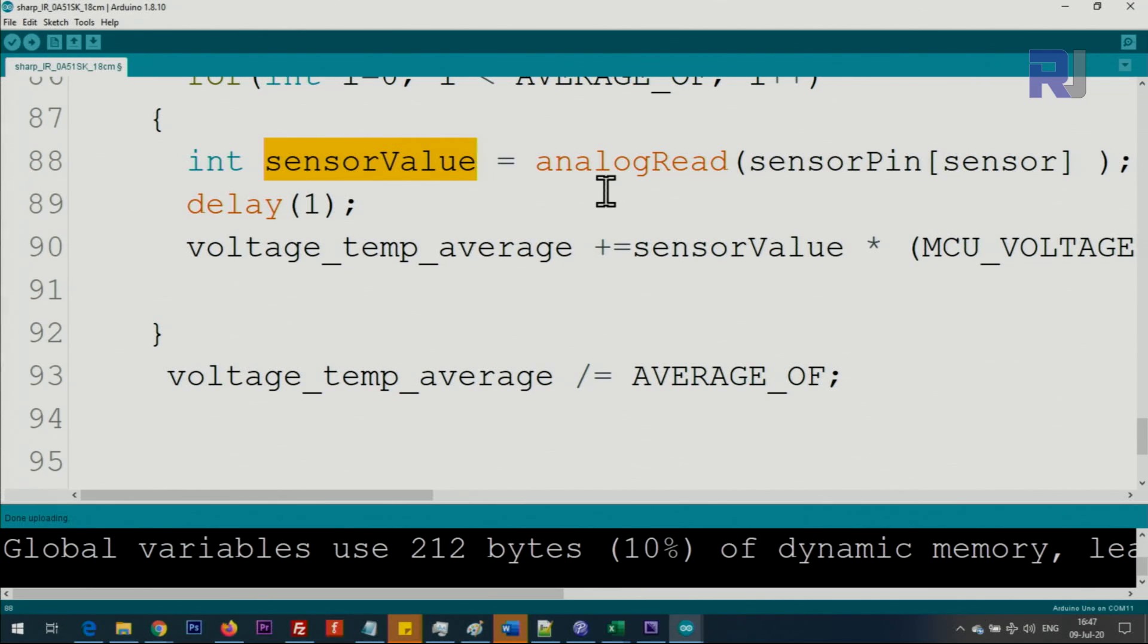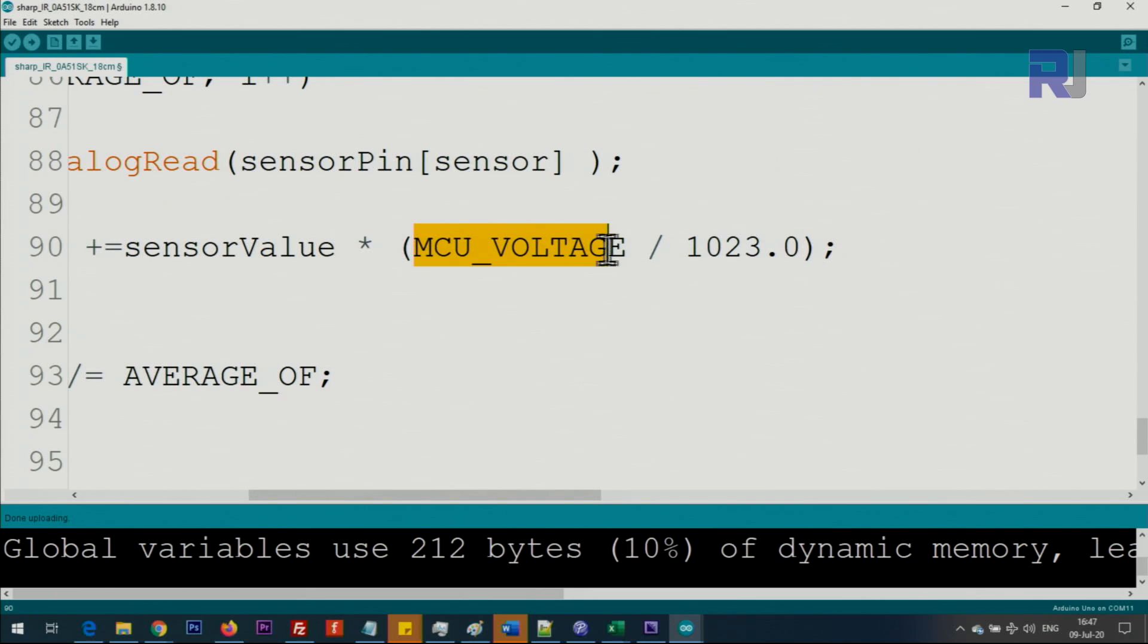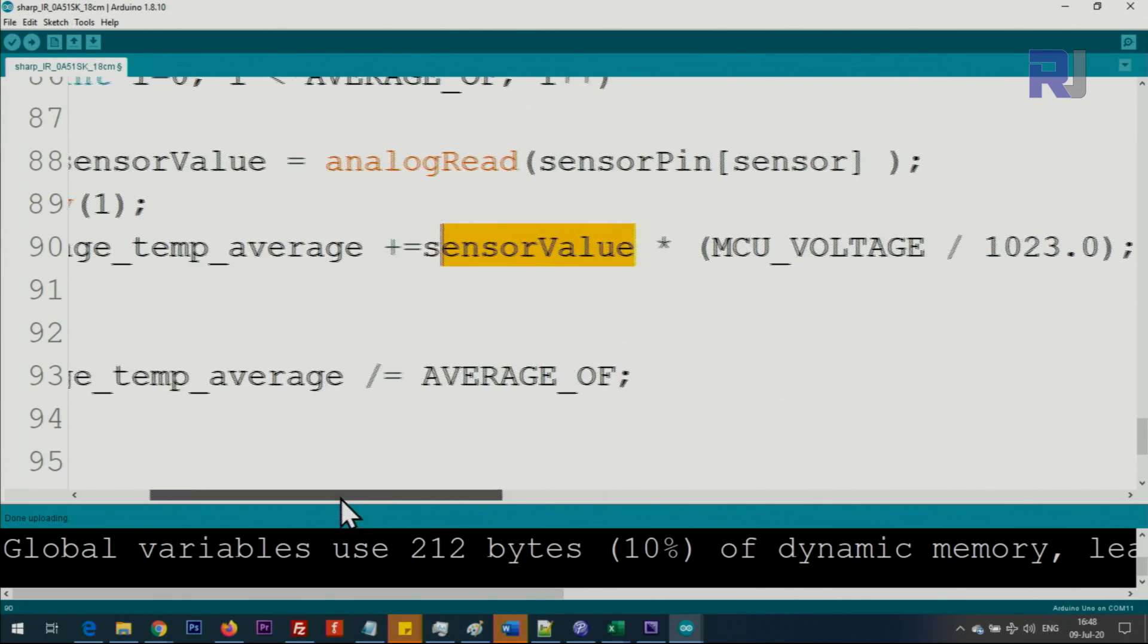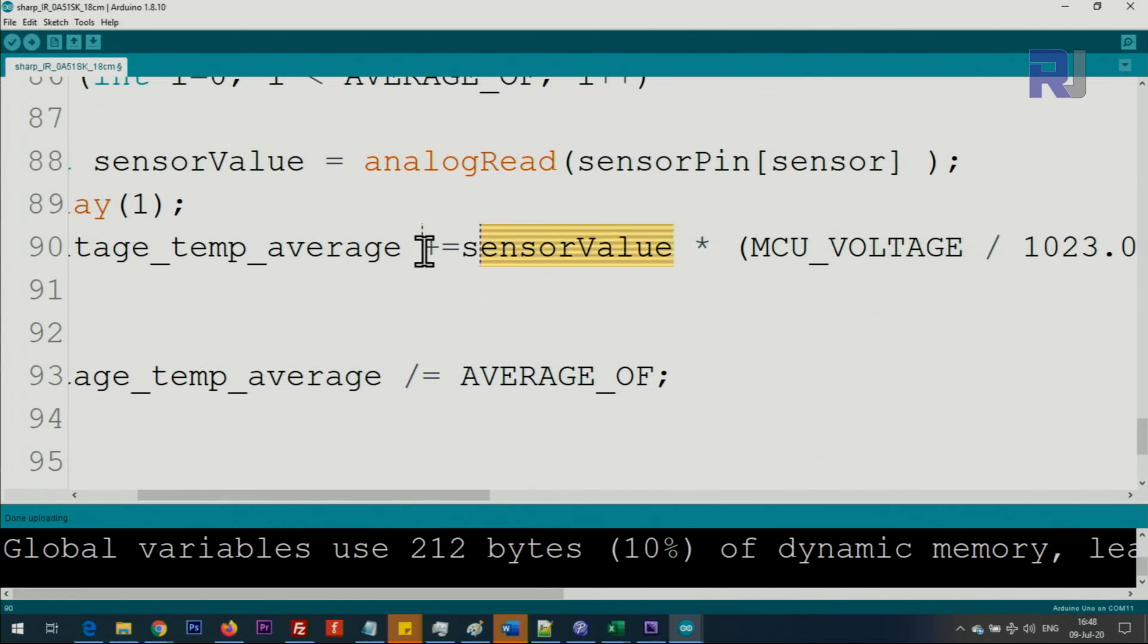The value will be stored in sensor value, and the value will be between 0 to 1023 in a 10-bit system. We have one millisecond delay to give it enough time to read. Then we multiply this value by 5 over 1023 - this 5 is the 5 volts operating voltage of Arduino, and 1023 is 2 to the power 10 minus 1. So we are dividing 5 volts by this many steps and we get a factor. When we multiply it by the sensor value you get a voltage, and then we are adding that calculated voltage to this variable.